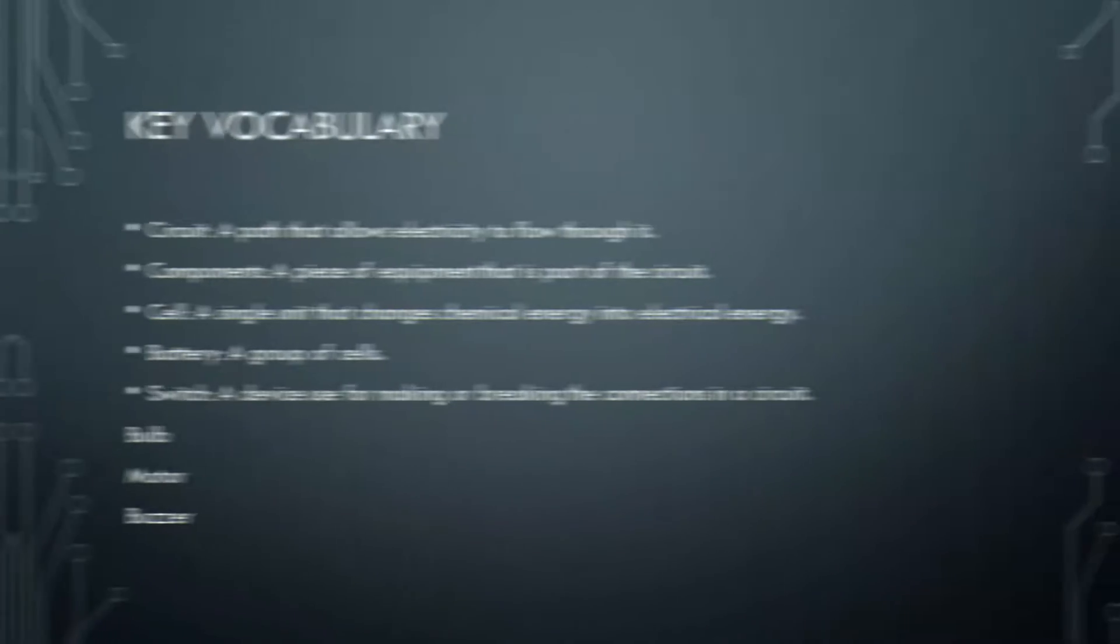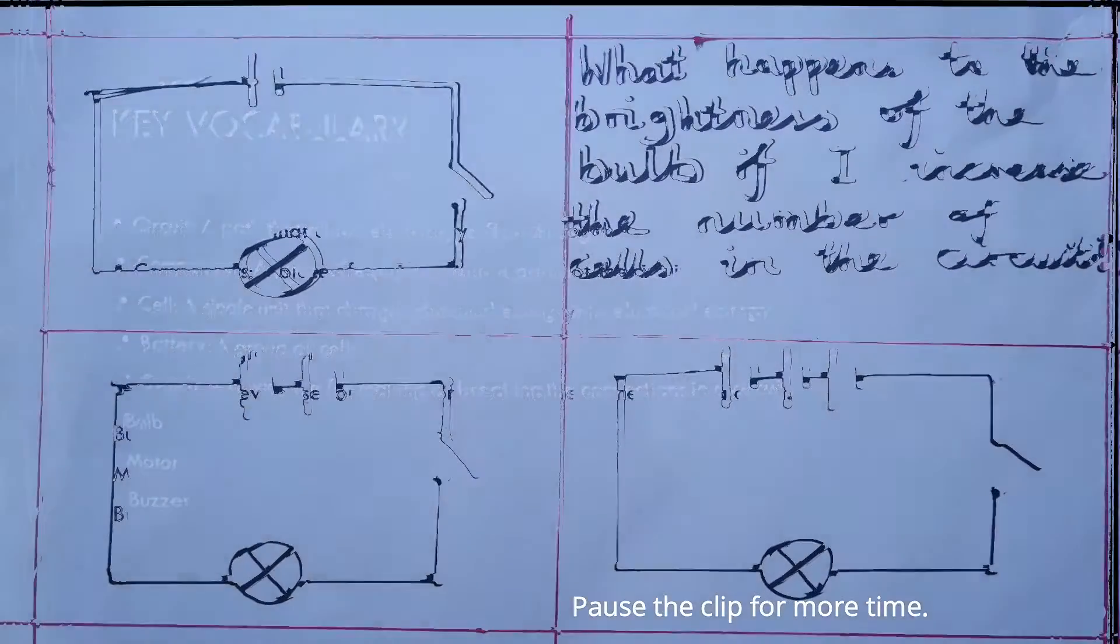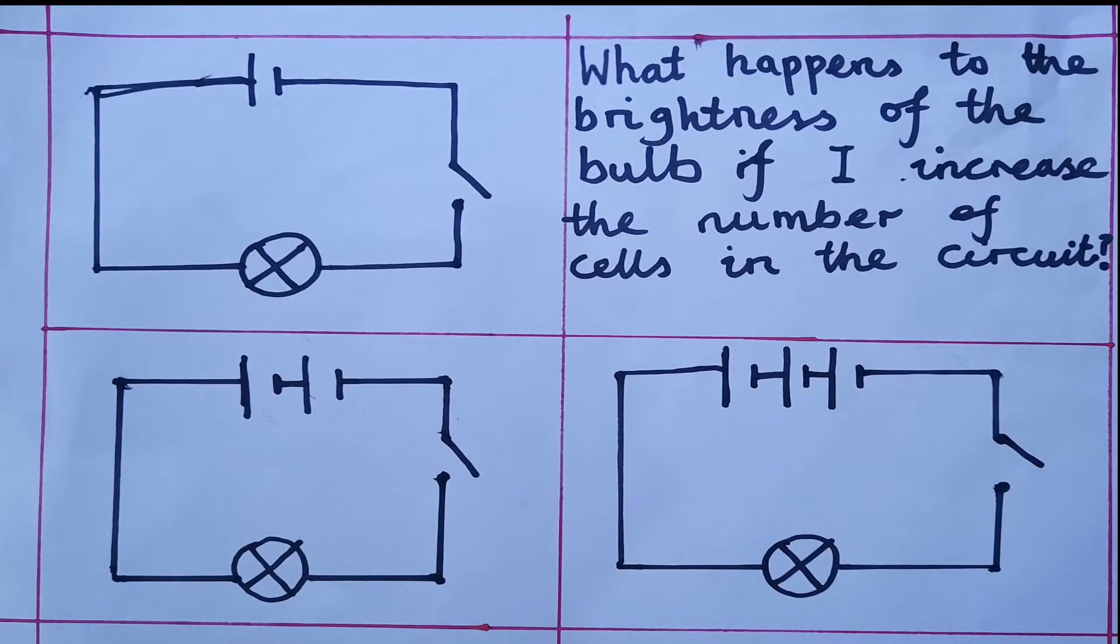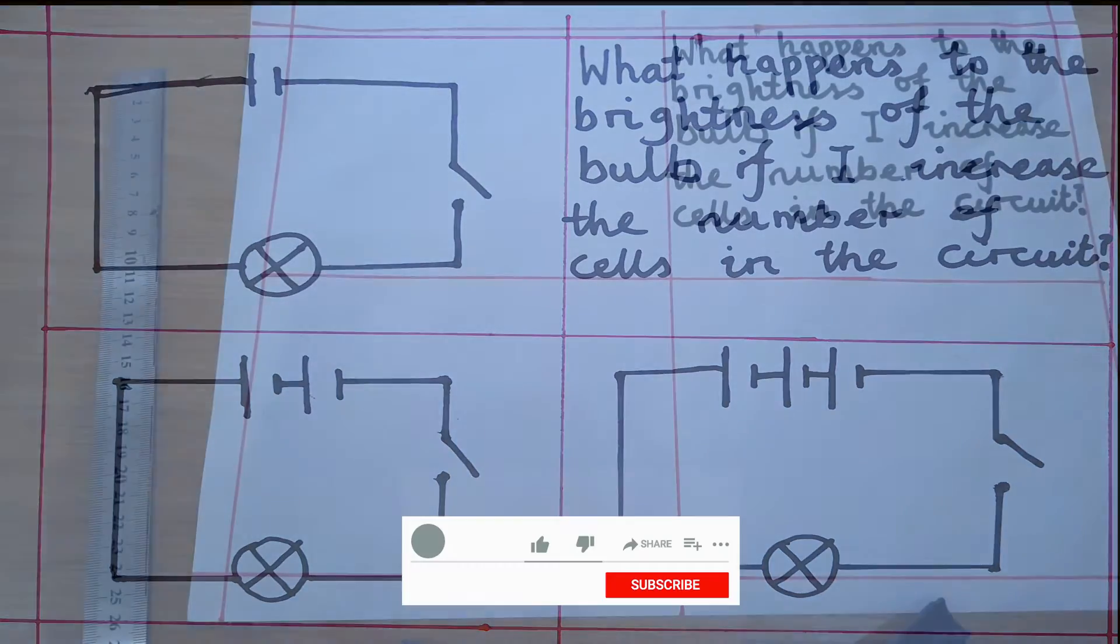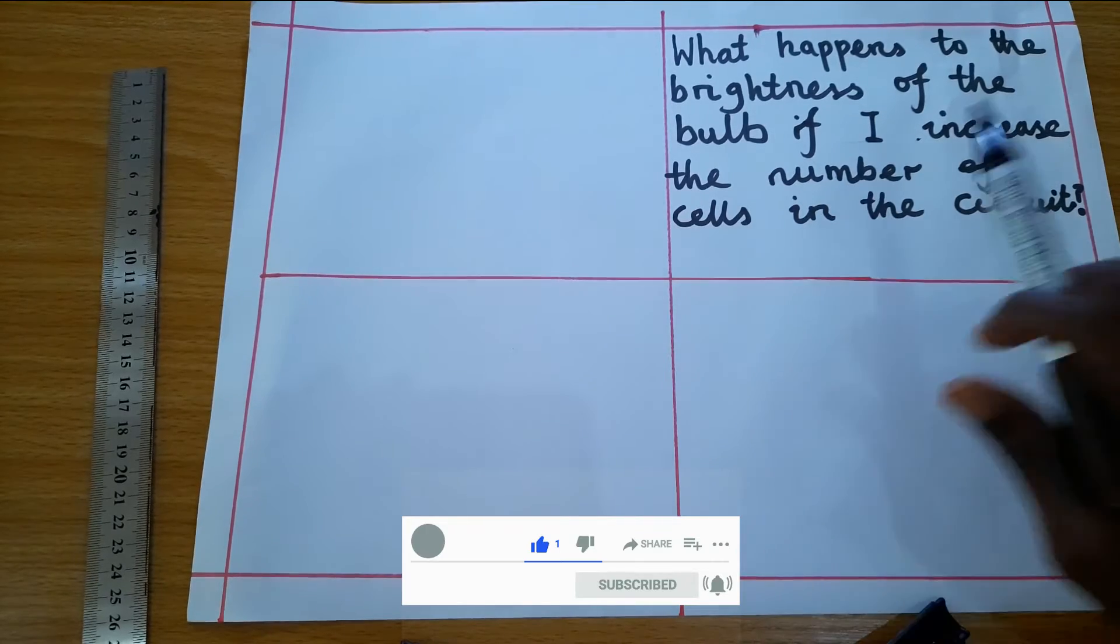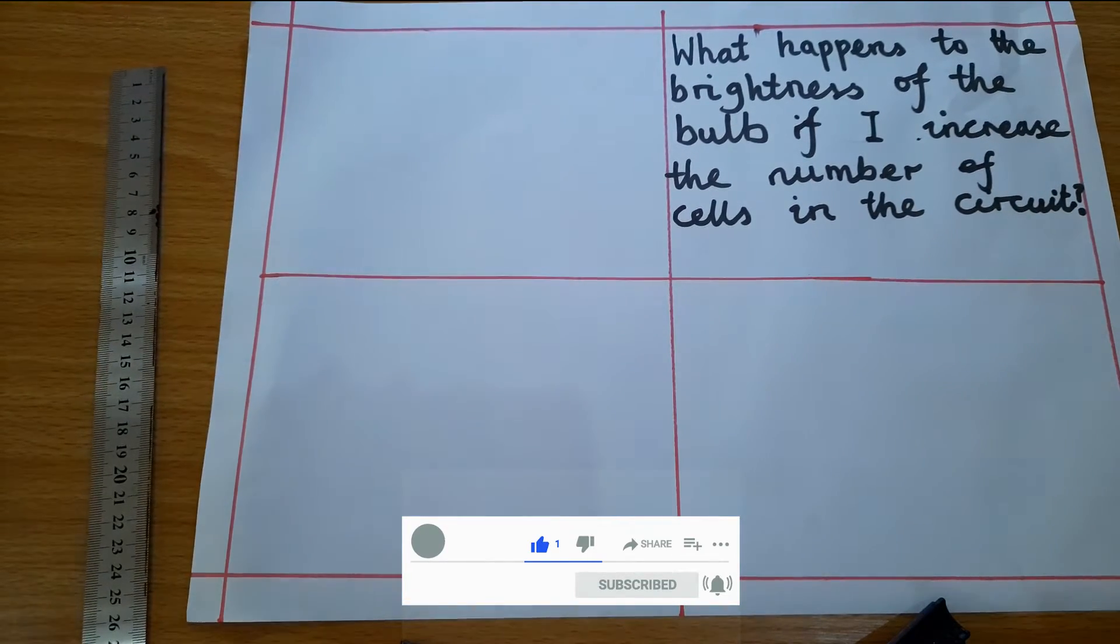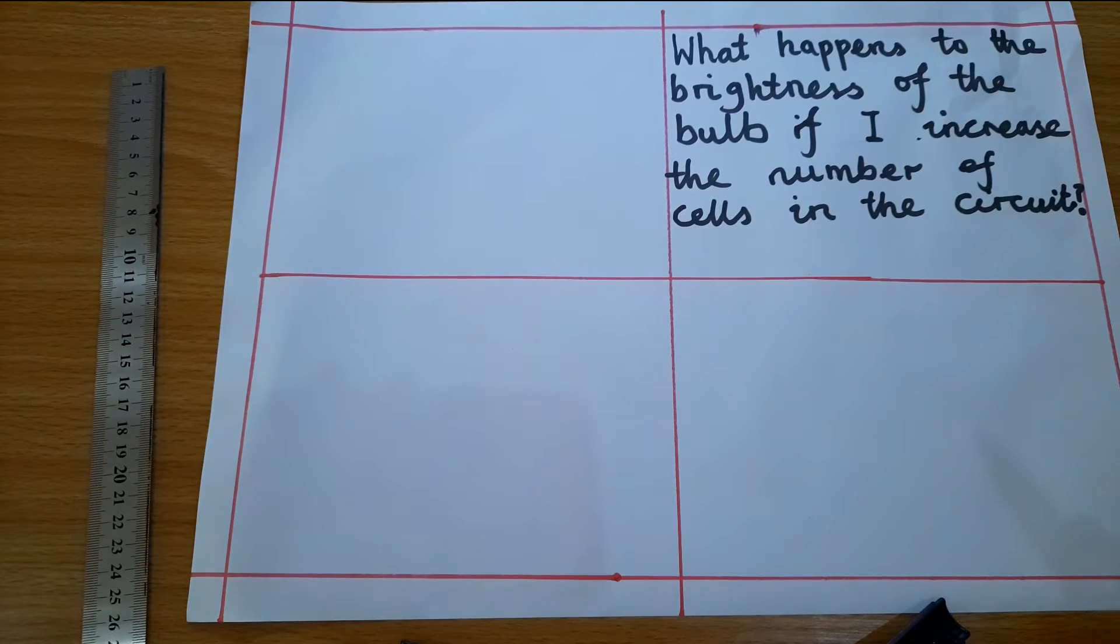Welcome once again to one of those episodes where we explore the causal relationship between components and the circuits. Let's get to it. What happens to the brightness of the bulb if I increase the number of cells in the circuit? So now this time the variable we're changing will be the number of cells in the circuit.